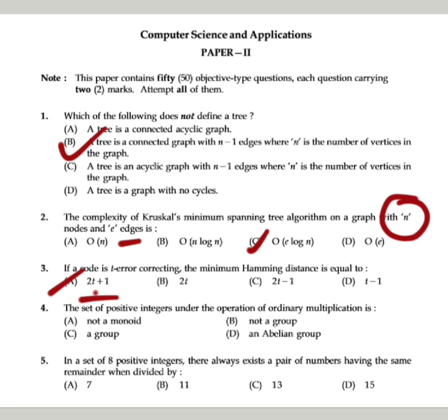Next question: a set of positive integers under the operation of ordinary multiplication. This is a problem from discrete mathematics. The set of positive integers under the operation of ordinary multiplication is not a group, but it is a monoid. If the question asks about a group, the answer will change. So I will mention that the set of positive integers under ordinary multiplication is not a group but is a monoid, because properties like inverse will justify and satisfy. So option B is correct.